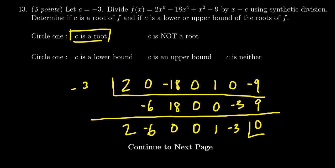So then the next part: is c a lower bound, is it an upper bound, or is it neither? Now, since c is a negative number, being an upper bound is not possible. Only positive c's can be upper bounds and negatives could be lower bounds. Of course, the answer could be neither. But since c is negative, I know it can't be an upper bound.